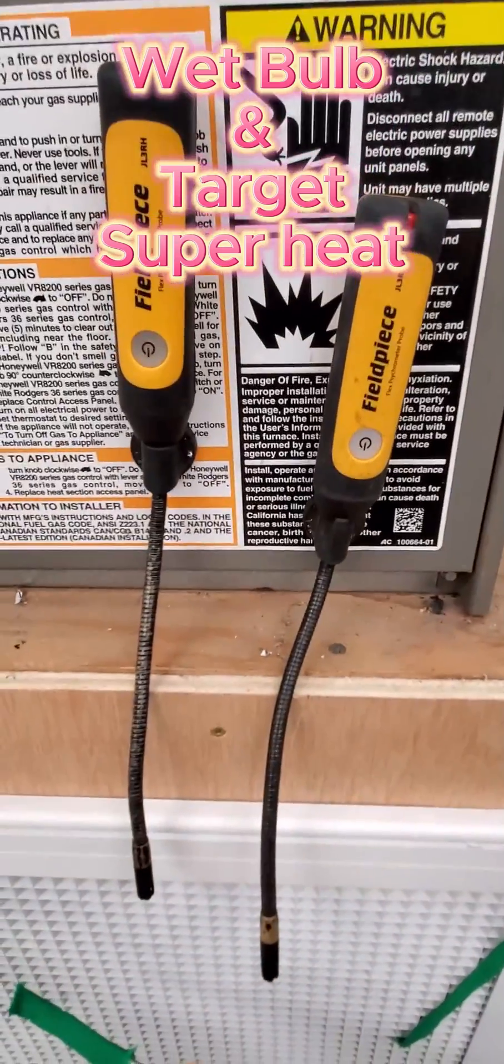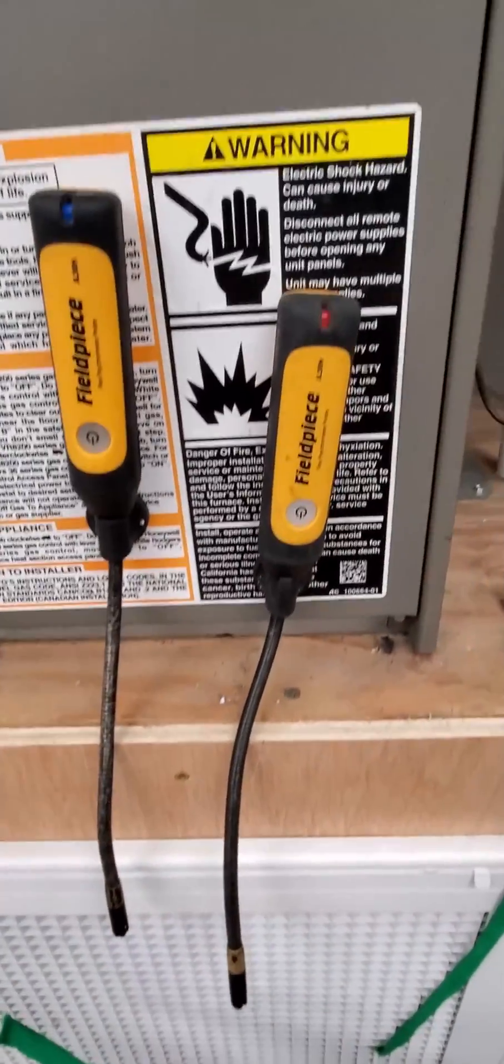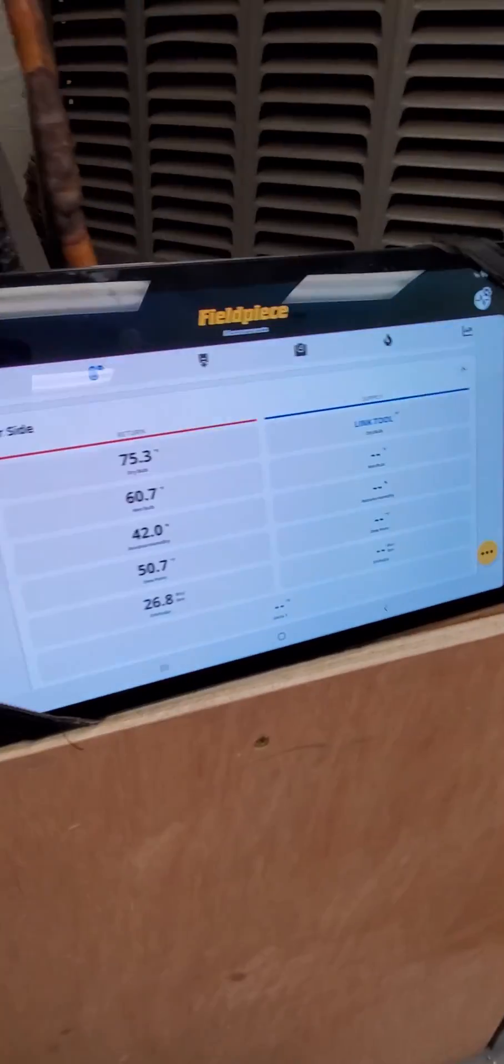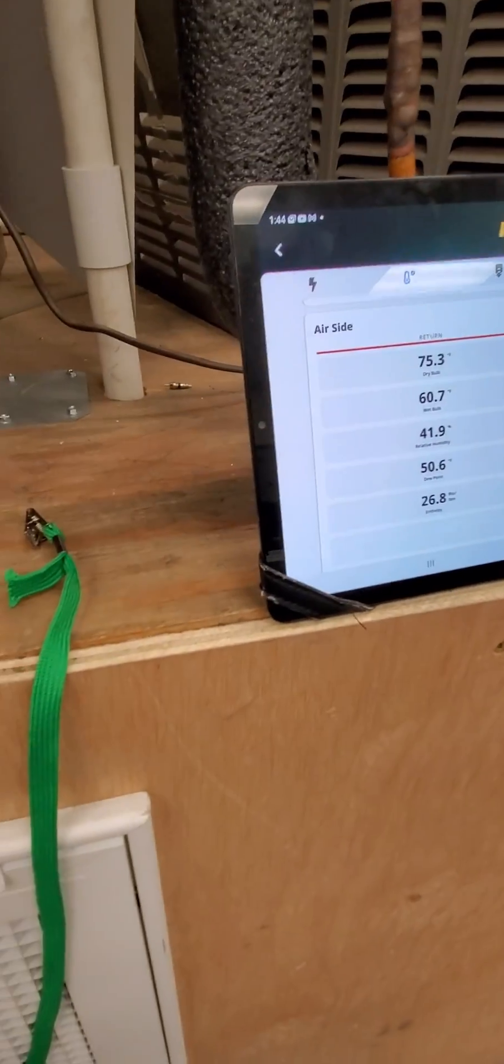All right, so you don't have almost $400, $300 for a set of smart probes here to get your wet bulbs with, and you're going to need to take a wet bulb in a house.